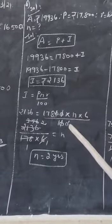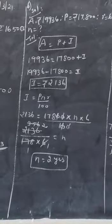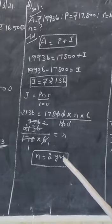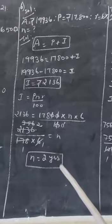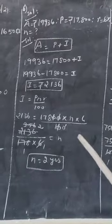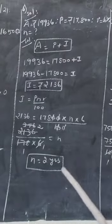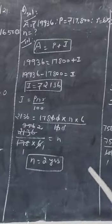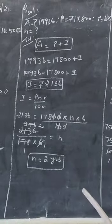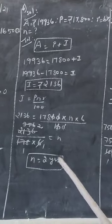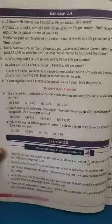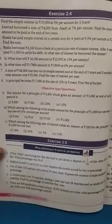So n equals 2136 divided by (178 multiplied by 6). Using cancellation with the 6 and 178 tables, we get n equals 2 years. This is solved the same way as Problem 5.